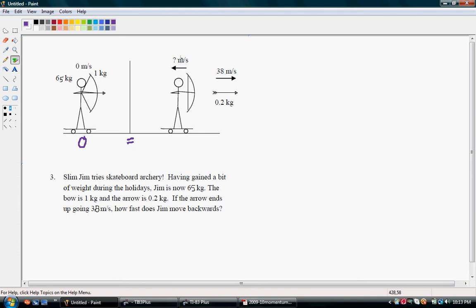Okay, afterwards we have the mass of Jim and the velocity of Jim plus the second object now since they've separated, the mass of the arrow times the velocity of the arrow.